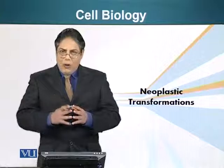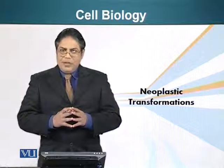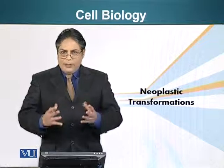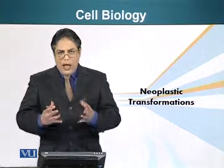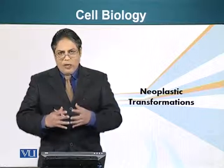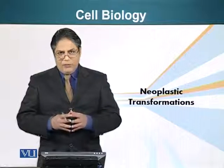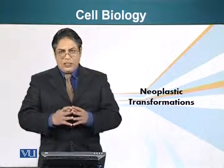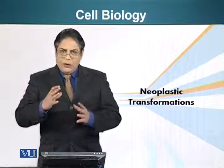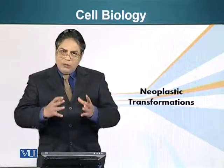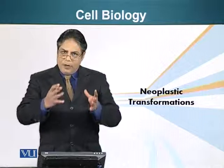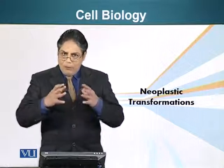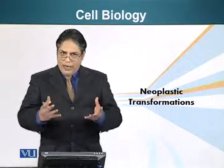However, we all know life isn't perfect. Things do go wrong. And today we are going to see what happens when some of those things go wrong and cause uncontrolled cell division. Another name for this uncontrolled cell division is cancer. So today we are going to see how cancers form and what are the molecular and cellular basis of the formation of cancer.